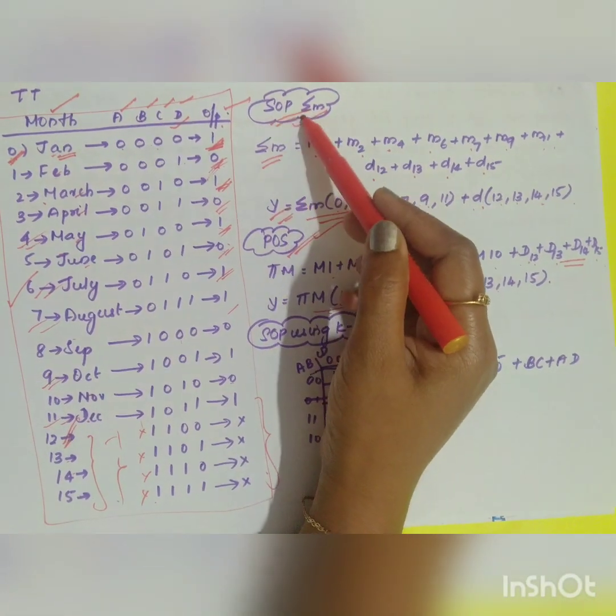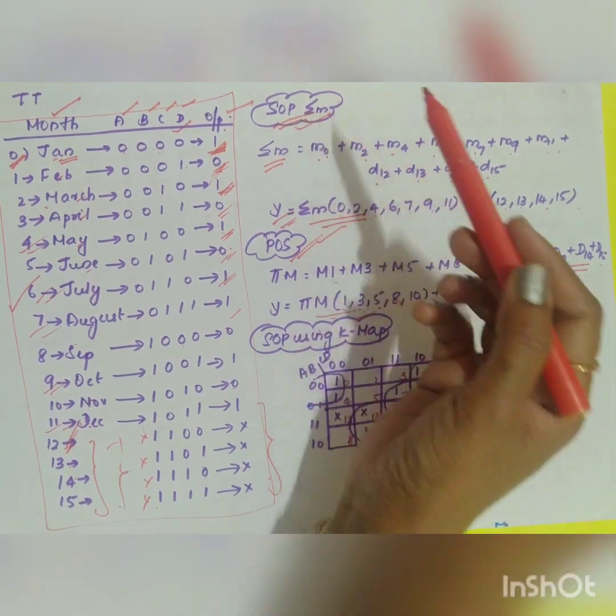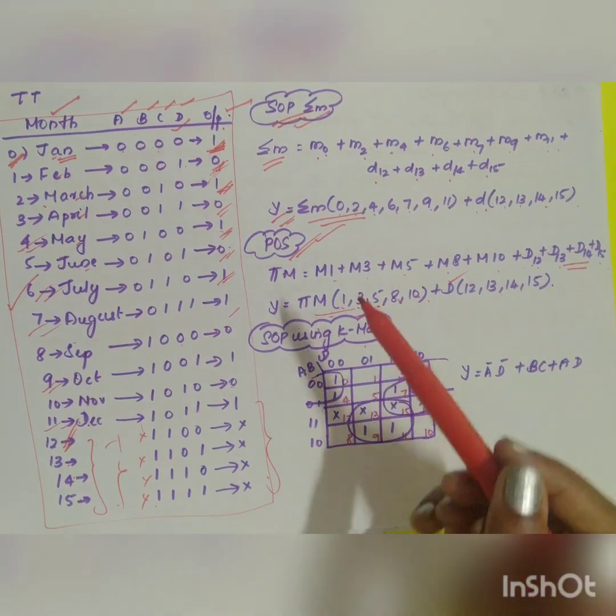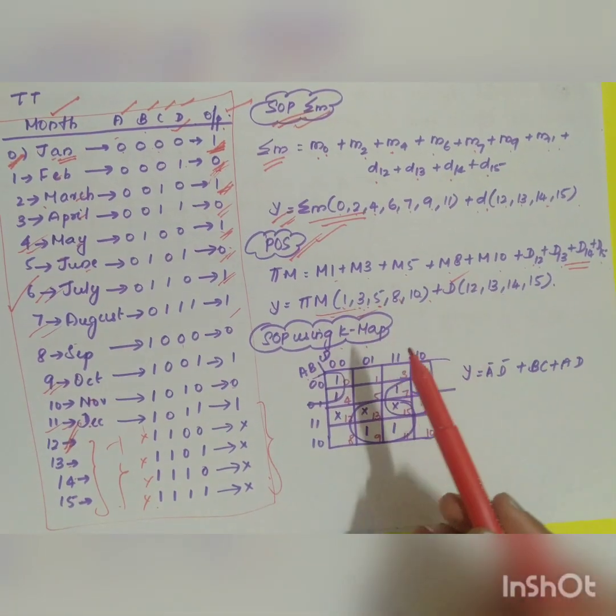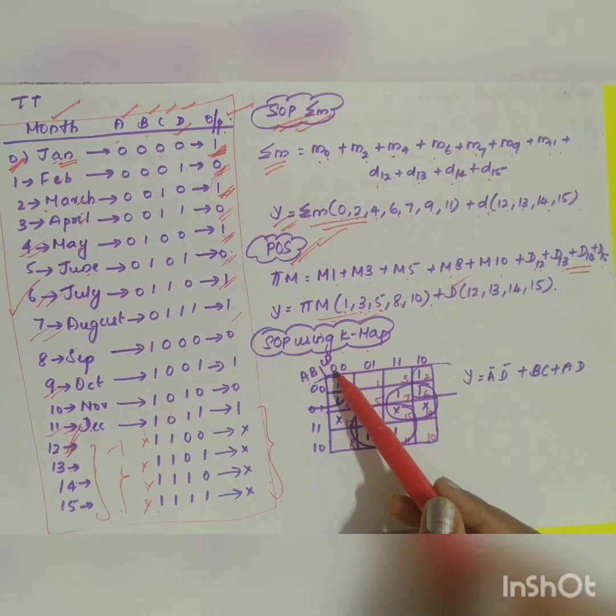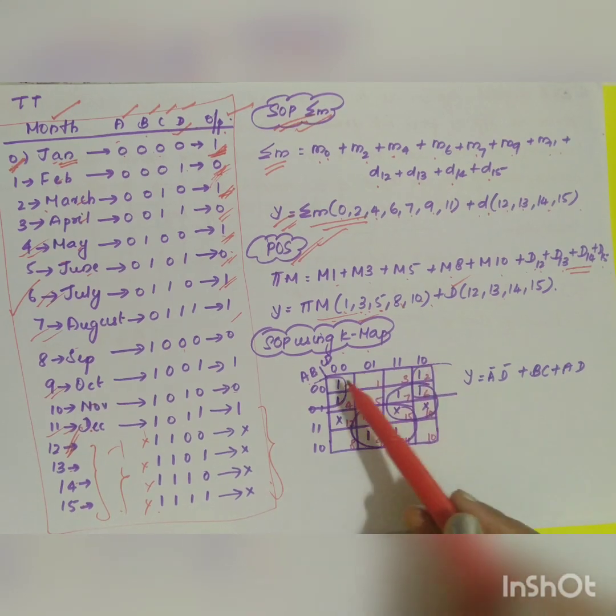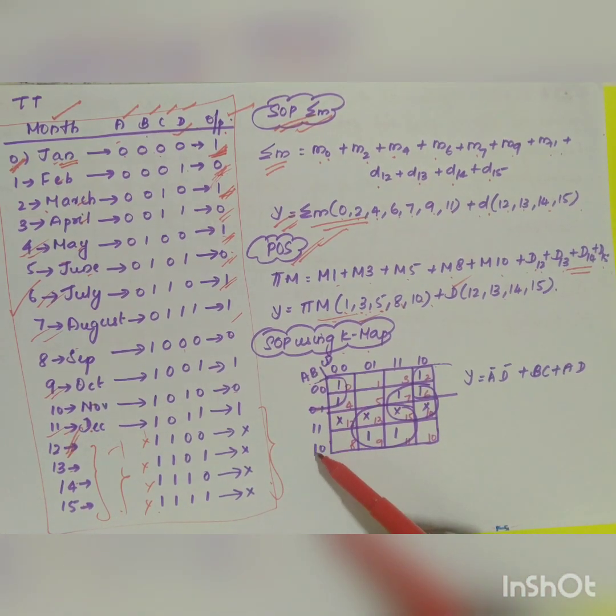Now you have to solve SOP. The second question is solve the SOP using your K-MAP. So what are the variables you have? A, B, C, D. So you know how to draw your K-MAP. 0, 0, 0, 1, 1, 1, 1, 0, 0, 0, 1, 1, 1, 1, 0.